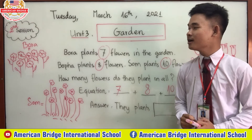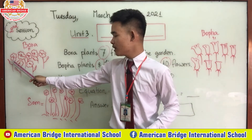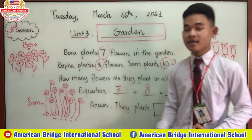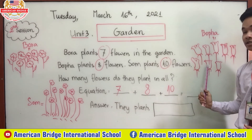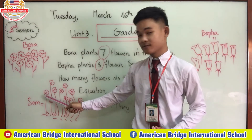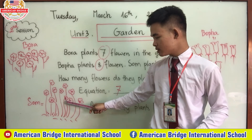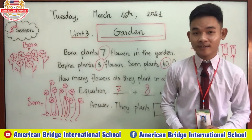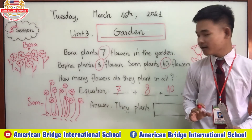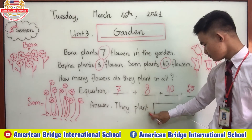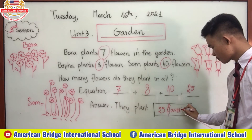Are you sure? Let's count all together. These are Bora's flowers: one, two, three, four, five, six, seven. Then Boppa's flowers: eight, nine, ten, eleven, twelve, thirteen, fourteen, fifteen. Som's flowers: sixteen, seventeen, eighteen, nineteen, twenty, twenty-one, twenty-two, twenty-three, twenty-four, twenty-five. So we have twenty-five in all in the garden. They plant twenty-five flowers in all.